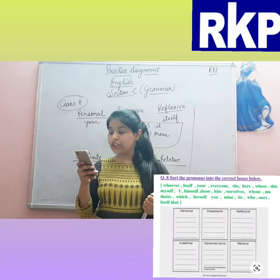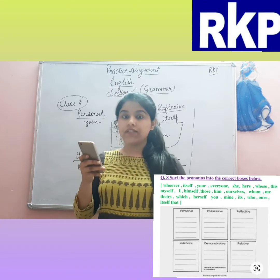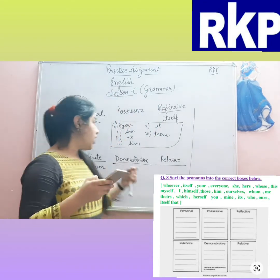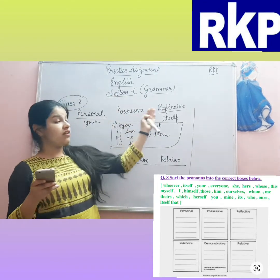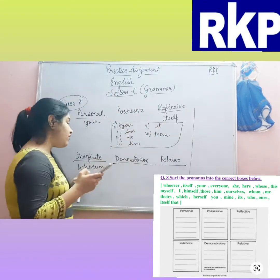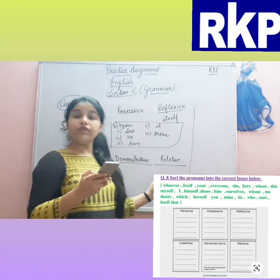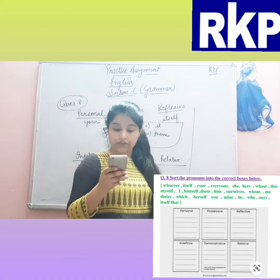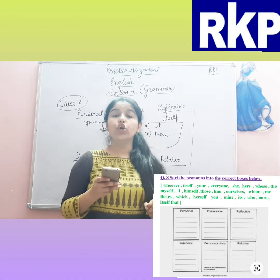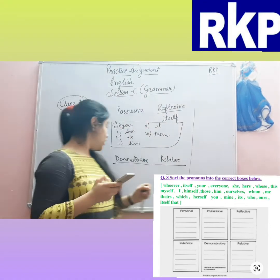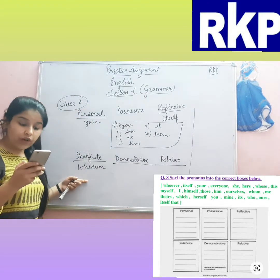The next question is to sort the nouns into the correct boxes given below — personal, possessive, reflexive, indefinite, demonstrative, or relative. So first: 'whoever' is an indefinite pronoun.